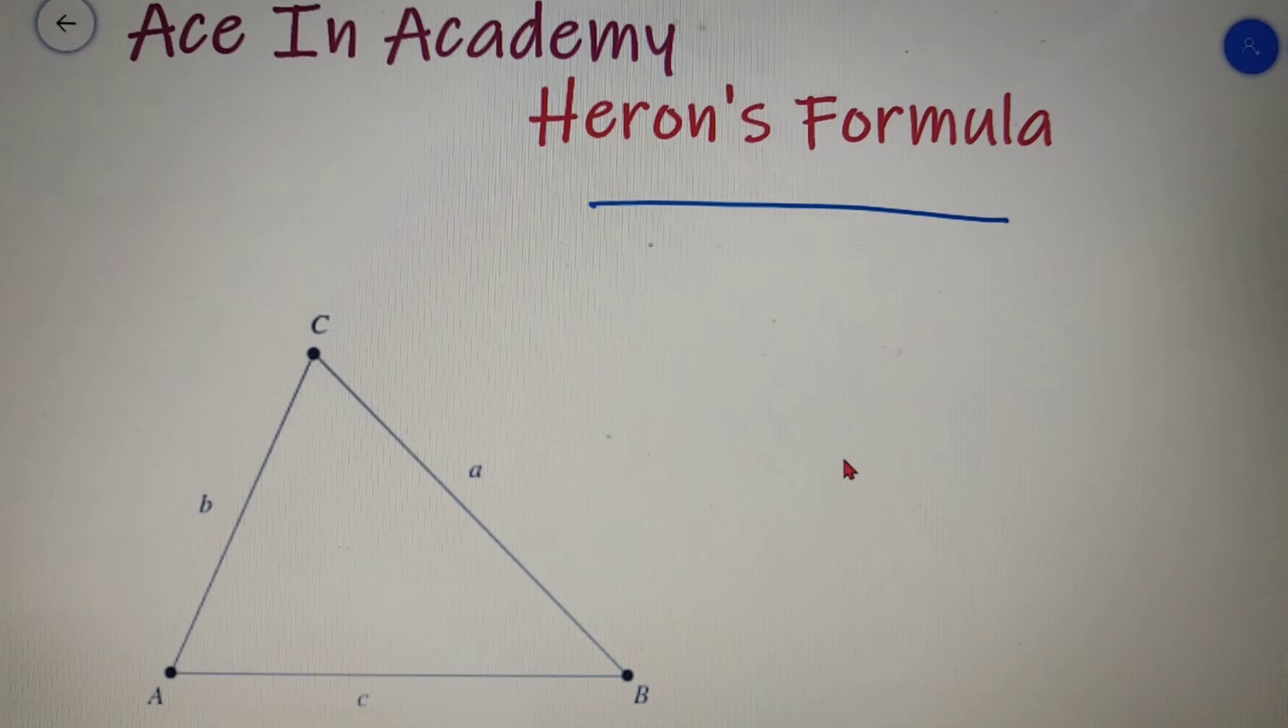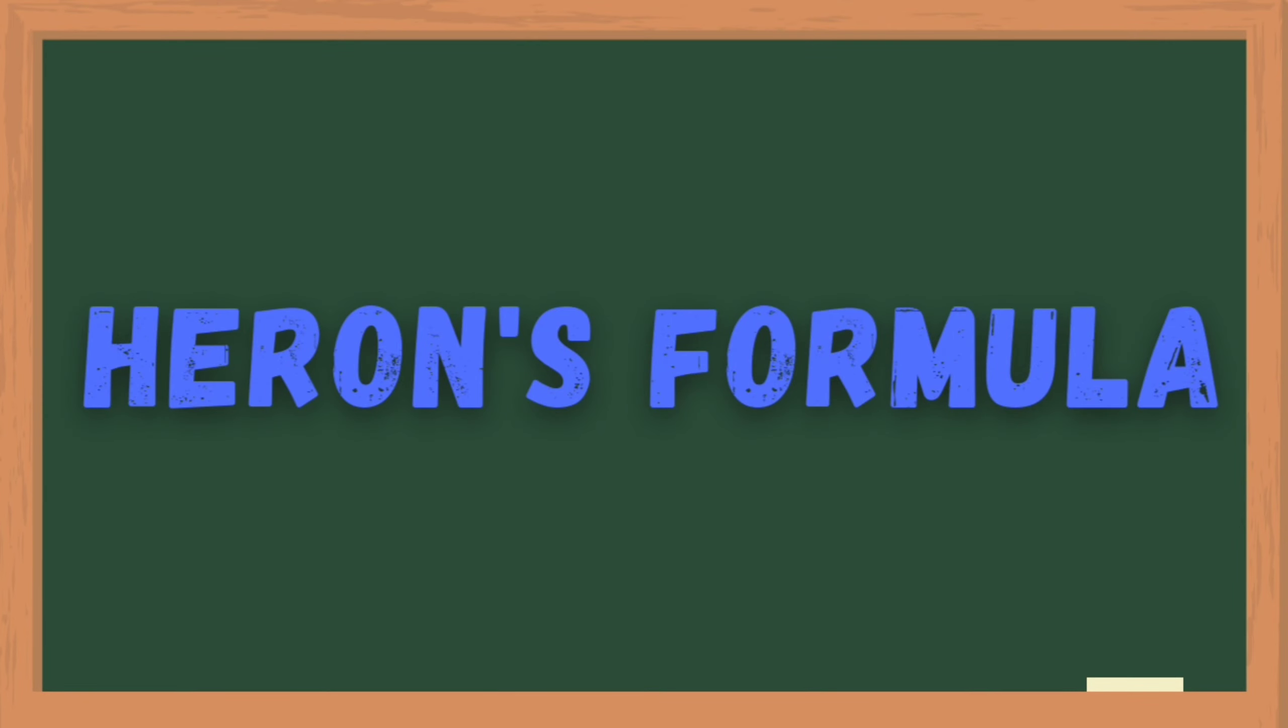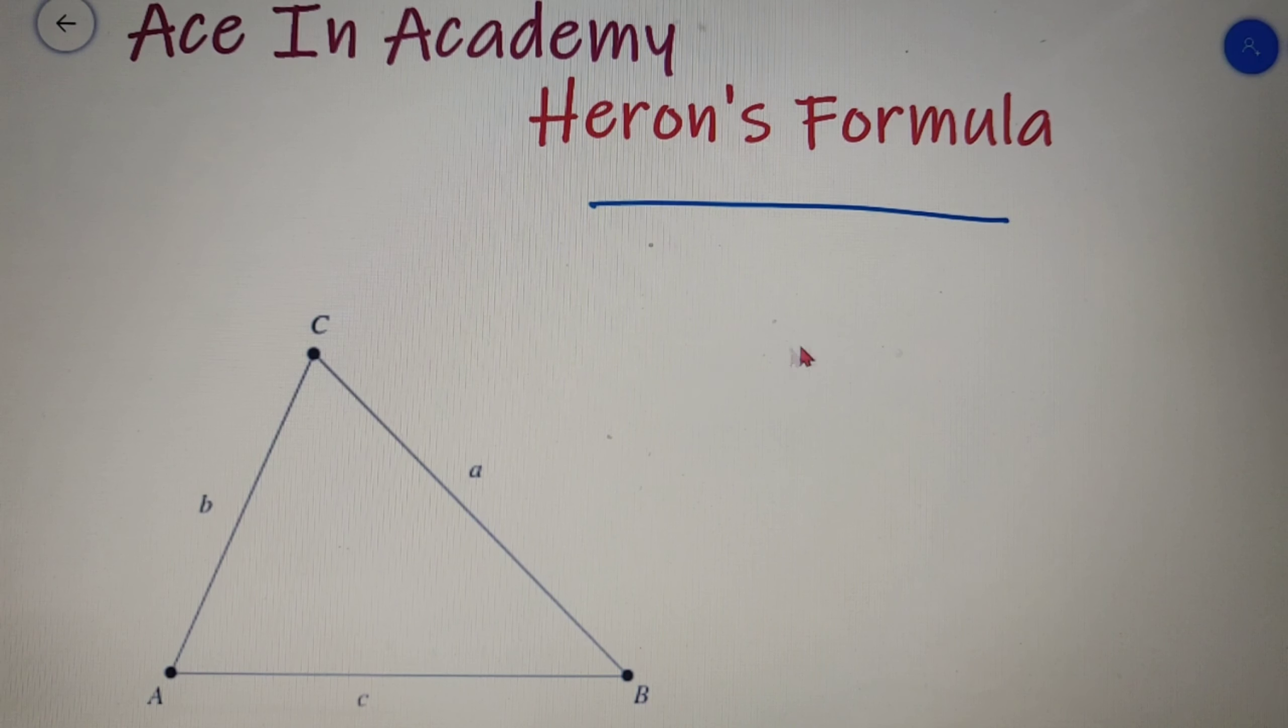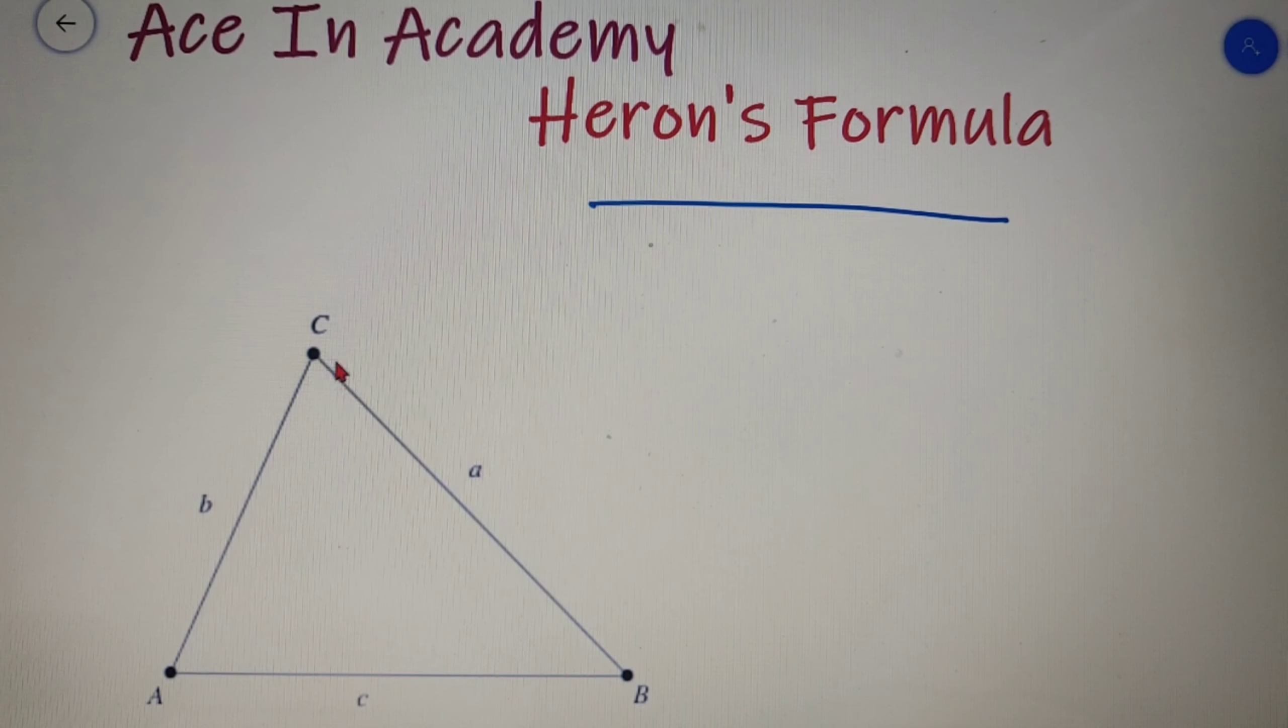Now let's move on to Heron's formula. Heron's formula is used to find the area of a triangle when all the lengths of the sides are given. We know that area of a triangle is equal to half into base into height, but in some cases to find the height of the triangle is not that easy. So in those cases we use Heron's formula given that all the lengths of the sides are provided.